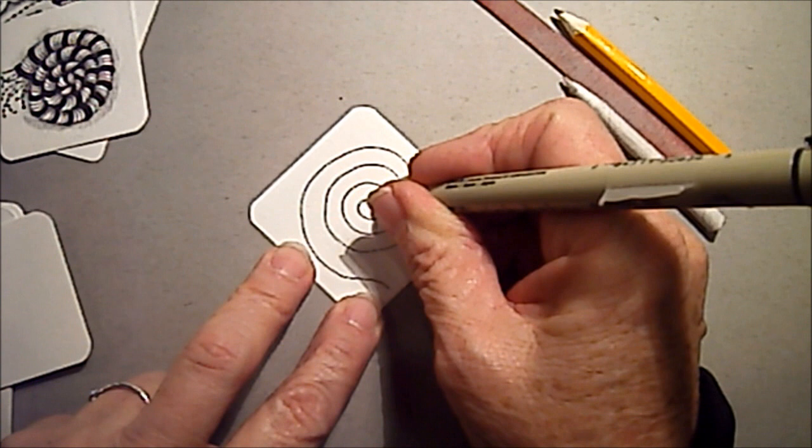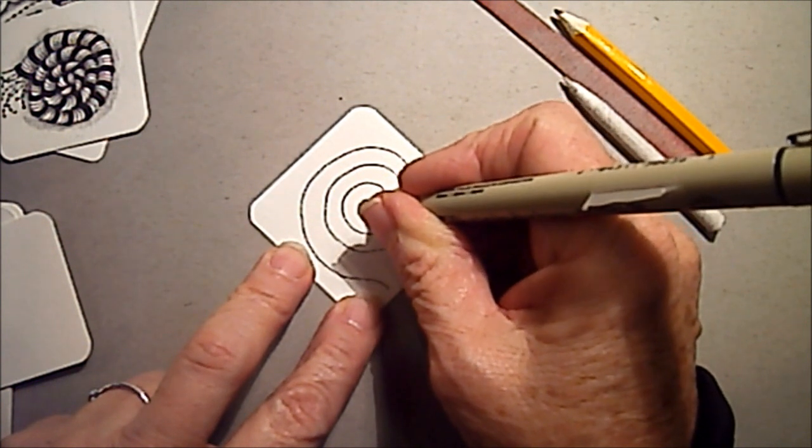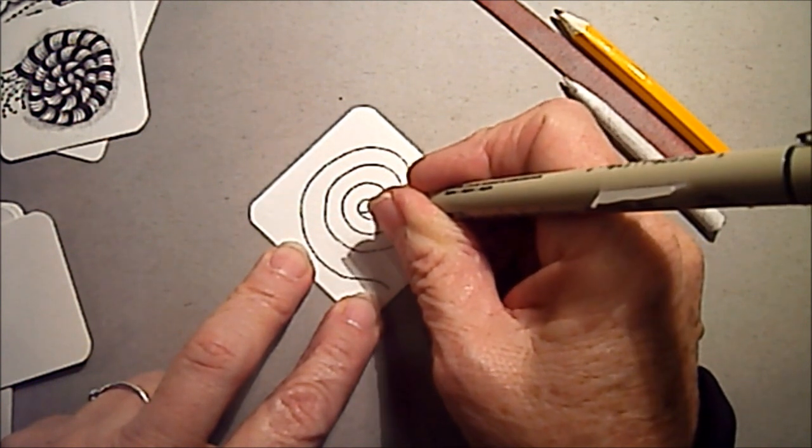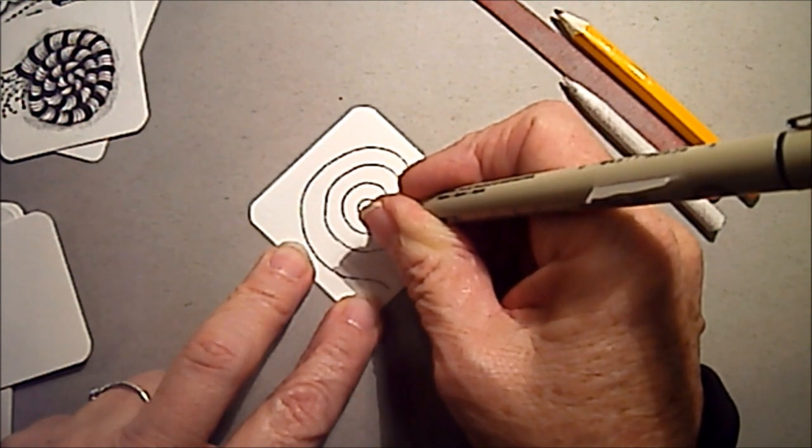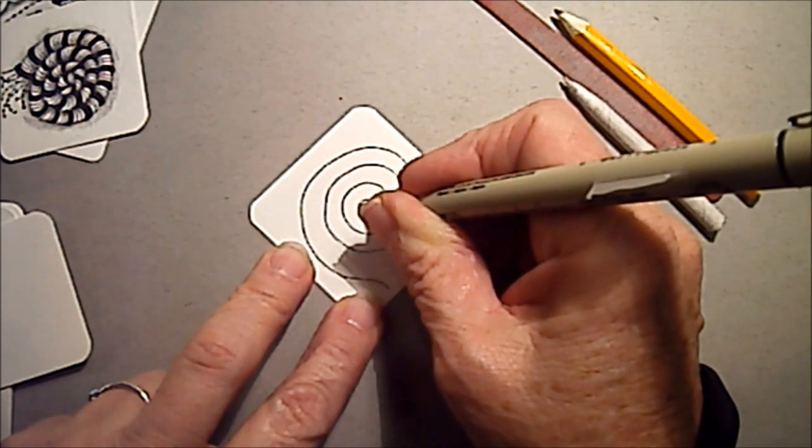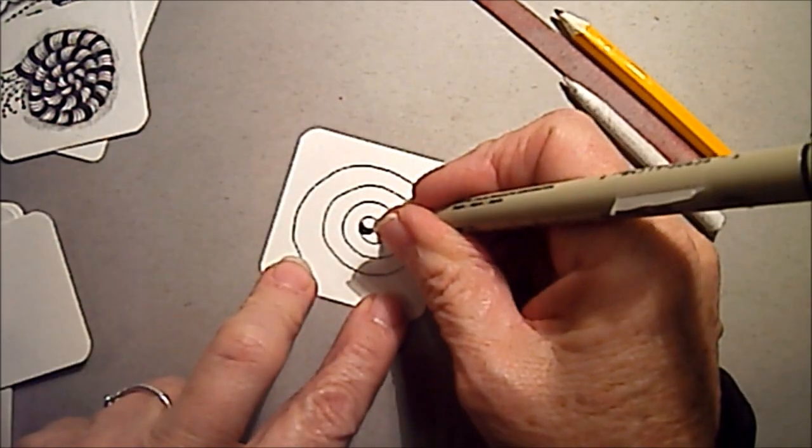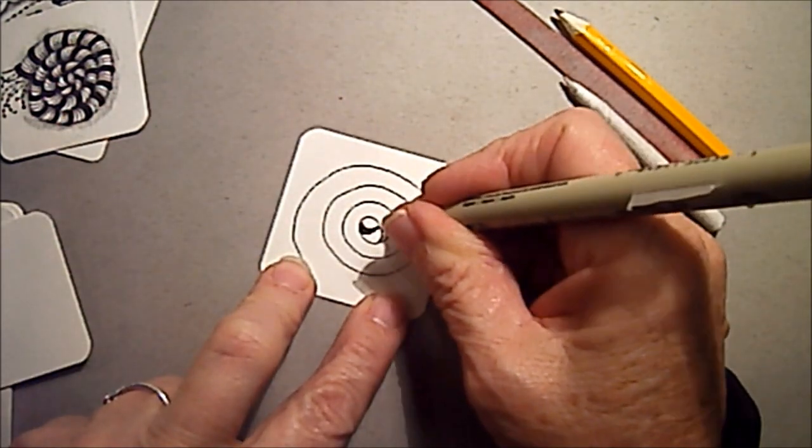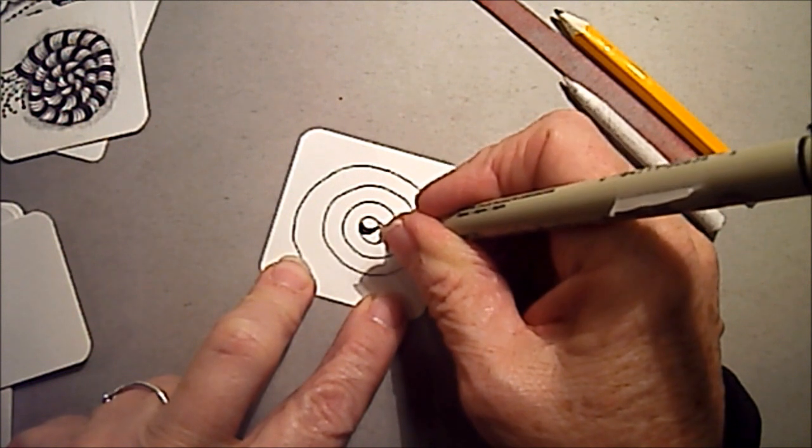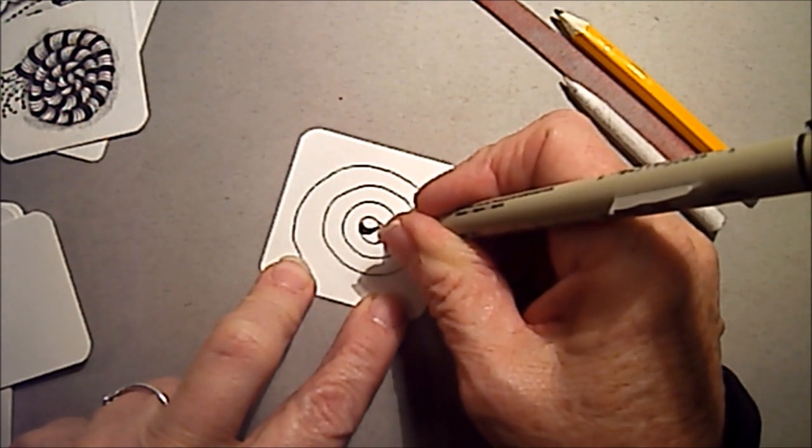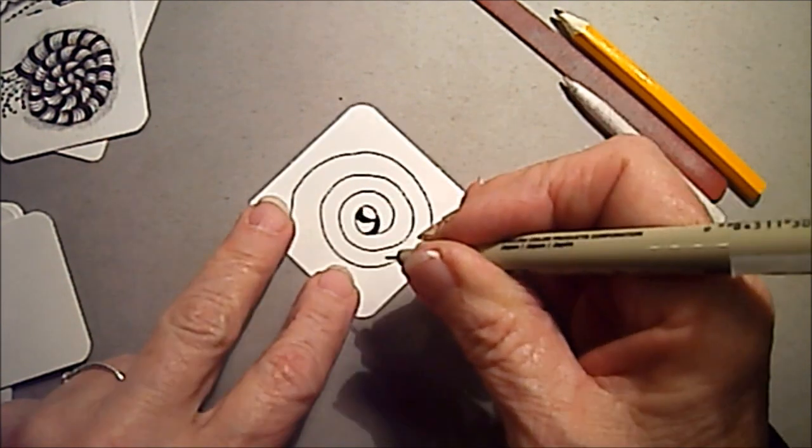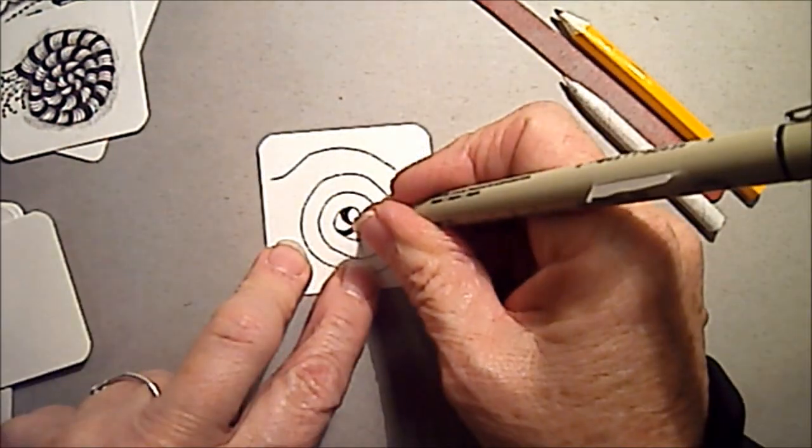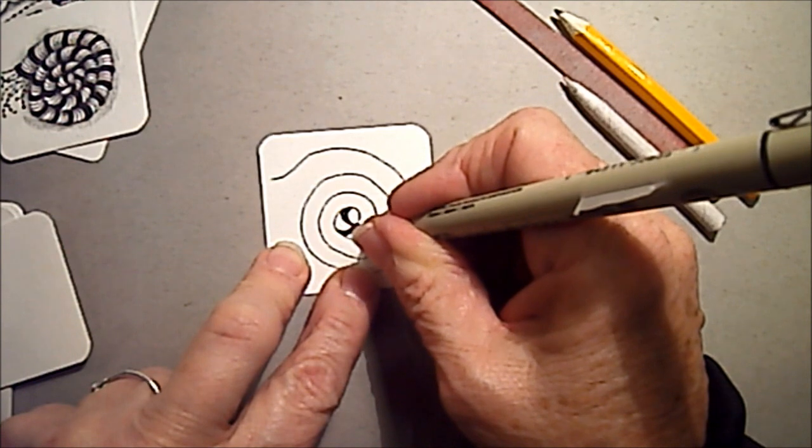Then I'm going to start with the center and draw a curved line, two curved lines, and fill that in. I'm going to make a stripe around this spiral, and I want those lines to be curved a little, so I rotate my tile. I'm going to draw a little curved line.